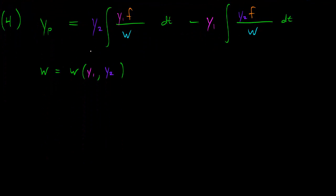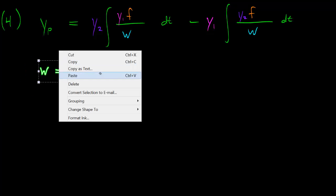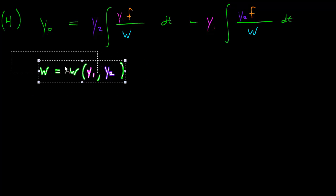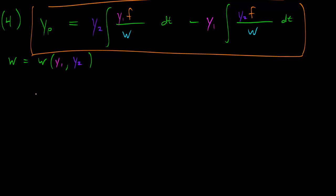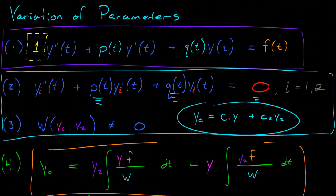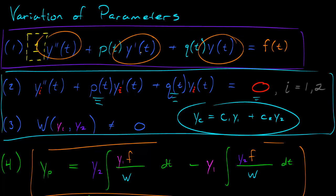I've got my shorthand notation written right here — W is the Wronskian of y1 and y2. If we want to verify that this works as a solution, the first thing we need to do is find its derivative. We're going to plug yp into our differential equation. We already know yp; we need to find yp prime, and once we've found that, we'll find yp double prime. Then we'll plug all those into the left-hand side and see if we actually get f of t.